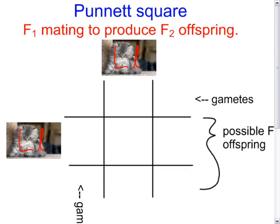The Punnett square for the F1 mating to produce the F2 offspring would then look something like this. We would take a brother and sister and use the Punnett square to separate the gametes. So capital L, lowercase l, capital L, lowercase l. So the gametes are represented by this section of the Punnett square.